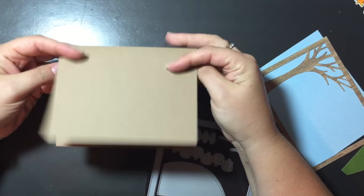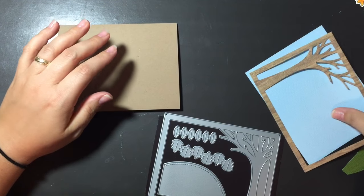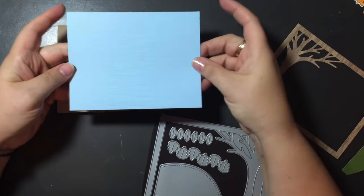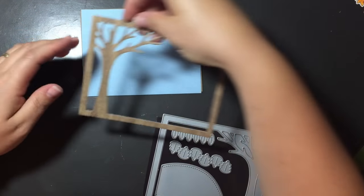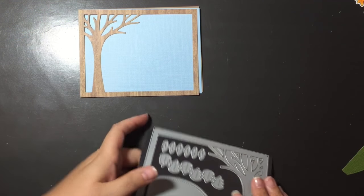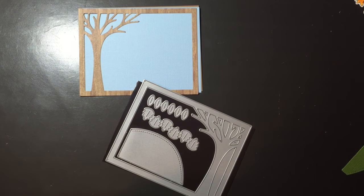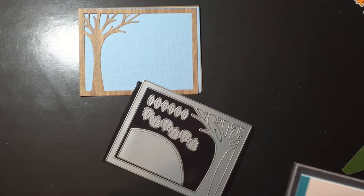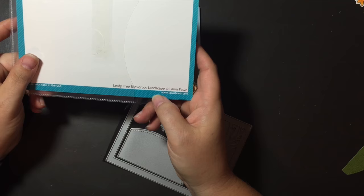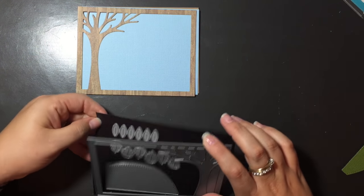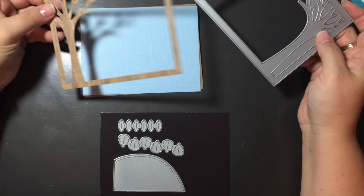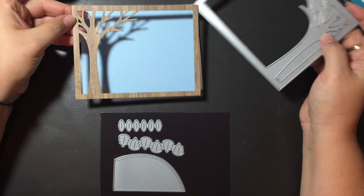I have my card base made out of craft and then I have a 5.5 x 4.25 piece of blue for my sky. And I have my frame and this is the, I meant to have names out here for you guys. Leafy tree backdrop landscape version. So I use this die with a patterned paper that has wood grain on it to make my frame and my tree.